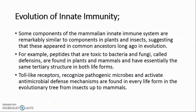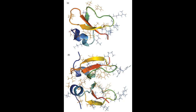Evolution of innate immunity: Some components of the mammalian innate immune system are remarkably similar to components in plants and insects, suggesting that these appeared in common ancestors long ago in evolution. For example, peptides that are toxic to bacteria and fungi, called defensins, are found in plants and mammals and have essentially the same tertiary structure in both life forms.